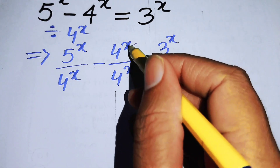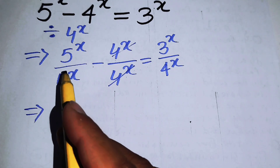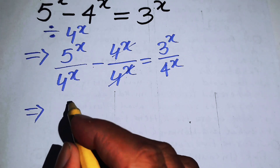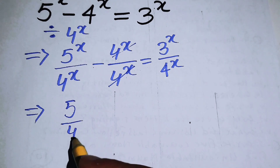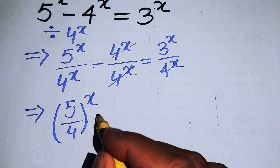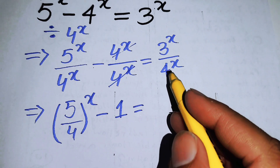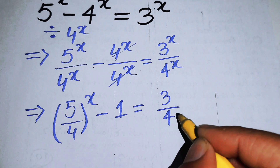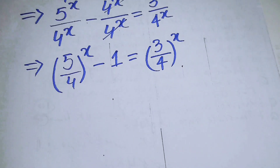Now we make some simplifications. These two terms cancel each other. Using the exponential law, we combine the exponents and write this as (5/4)^X minus 1 equals (3/4)^X.